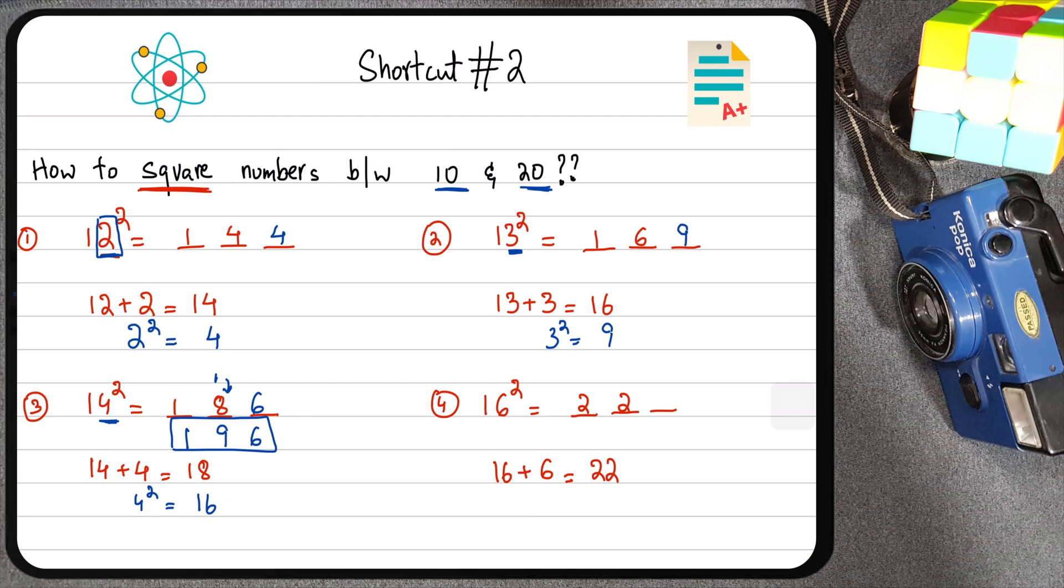And then what about the last digit? For the last digit, I'm going to take the last digit of 16, which is 6, and I'm going to square it. So 6 squared equals 36. So how am I going to write 36 here? I'm going to carry the 3 and then 6 here. So this is going to add up and give me 256.